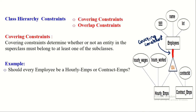Let us now discuss the covering constraint and overlap constraint applicable on class hierarchy. Covering constraint determines whether or not an entity in the superclass must belong to at least one of the subclasses. For example, every entity in the employee entity set must belong to either the hourly employee or contract employee entity set. If the answer is yes, a covering constraint exists, graphically represented by drawing a thick line between the parent entity set and the ISA symbol. This means every entity in the parent entity set must be present in one of its subclasses.